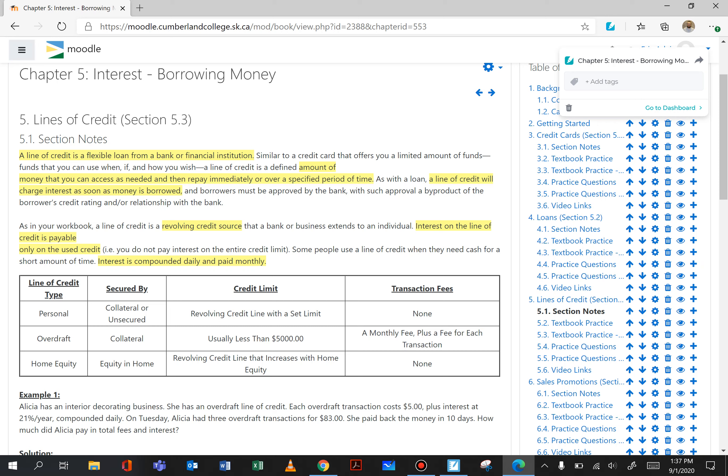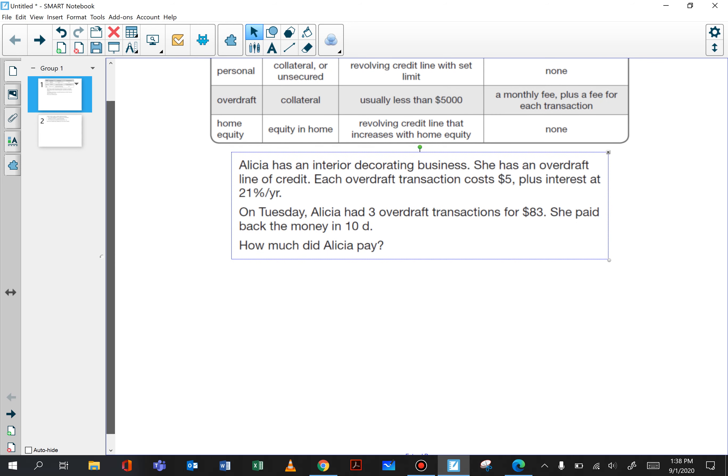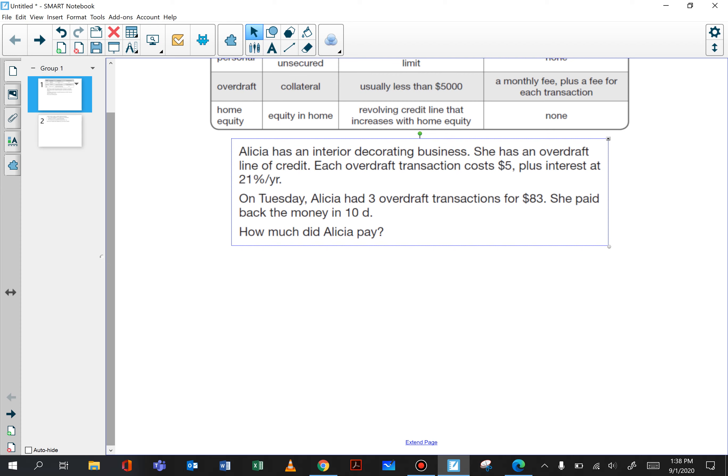Example number one: Alicia has an interior decorating business. She has an overdraft line of credit. Each overdraft transaction costs $5 plus interest at 21% per year. On Tuesday Alicia had three overdraft transactions for $83. She paid back the money in 10 days. How much did Alicia pay? So here first we need to figure out what the transaction total was for the costs.